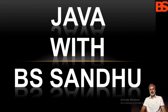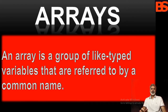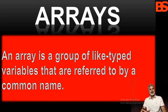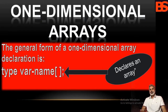In this lecture we will discuss about arrays in Java. An array is a group of like-typed variables that are referred to by a common name. Arrays of any type can be created and may have one or more dimensions. A specific element in an array is accessed by its index. Be careful — if you are familiar with C and C++, arrays in Java work differently than they do in those languages.